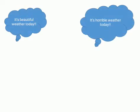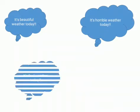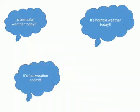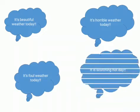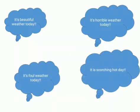Here are some of them. If the weather is beautiful, you can say it's beautiful weather today. If the weather is not good, you can say it's horrible weather today. If it is raining and windy, you can say it's foul weather today. If it is very hot or extremely hot, you can say it's a scorching hot day.